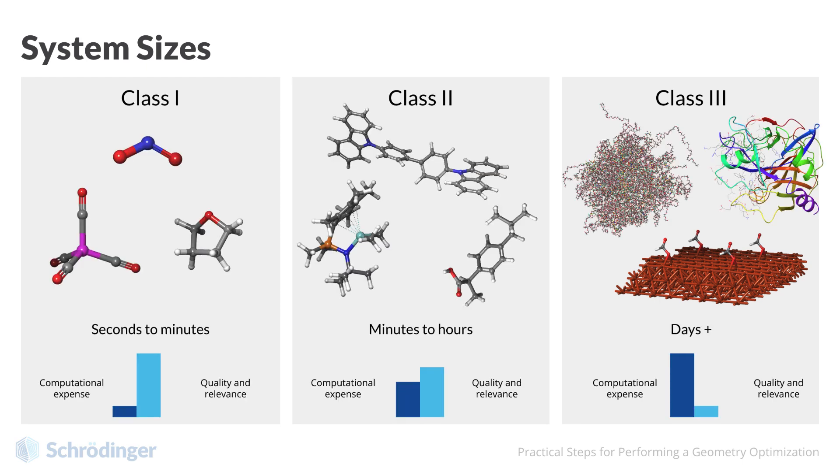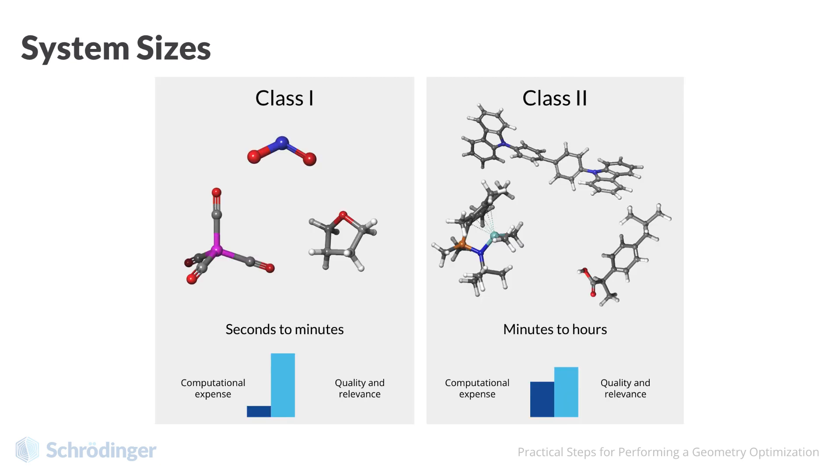For our purposes, in this video, we will only focus on the first and second class of molecules. In particular, we will mainly focus on molecules in the second class. These molecules present interesting challenges and opportunities, which can be explored with quantum mechanical calculations. These molecules are also the typical size of those found in organic electronic devices, drug-like molecules, homogeneous catalysts, and deposition precursors.